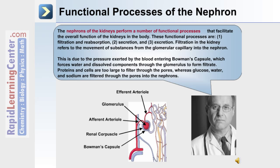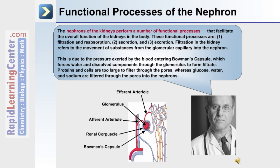The functional processes performed by the nephrons include filtration, reabsorption, secretion, and excretion. Filtration refers to the movement of substances from the glomerular capillary into the nephron. This is due to the pressure exerted by the blood entering Bowman's capsule, which forces water and dissolved components through the glomerulus to form filtrate. Proteins and cells are too large to filter, whereas glucose, water, and sodium are filtered through the pores into the nephrons.